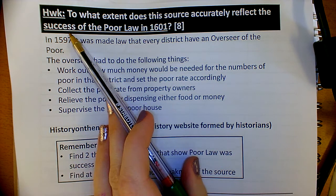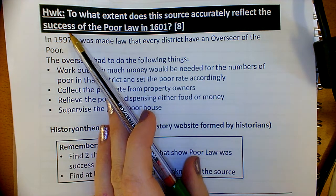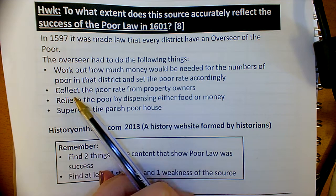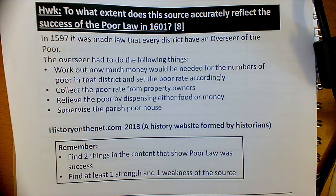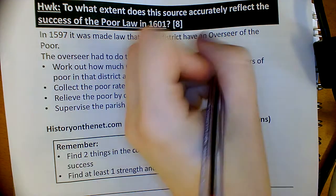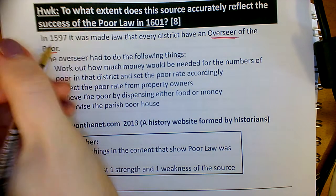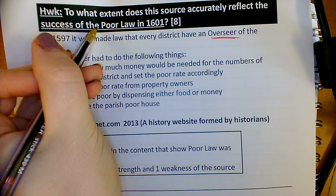Remember, we use a COUP paragraph to analyse a source, and you always want to find at least one strength and one weakness, and then you want to find two pieces of evidence for the content. There are lots of things you could have chosen, for example the fact that they have an overseer of the Poor — somebody in charge of the Poor Law — which would make it a success.